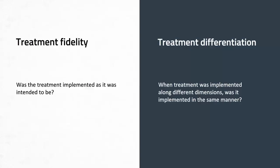Manipulation checks can also be useful for something called treatment differentiation. When a treatment is implemented across different dimensions or in different classes, you can use them to make sure it was implemented in the same manner. For example, if you're implementing a treatment across three different classes, you can check that the implementation was consistent in every class. And if you have one or two control groups, you can make sure there wasn't any diffusion in treatment by doing manipulation checks. The type of manipulation checks you use depends on the type of manipulation and intervention you're doing.